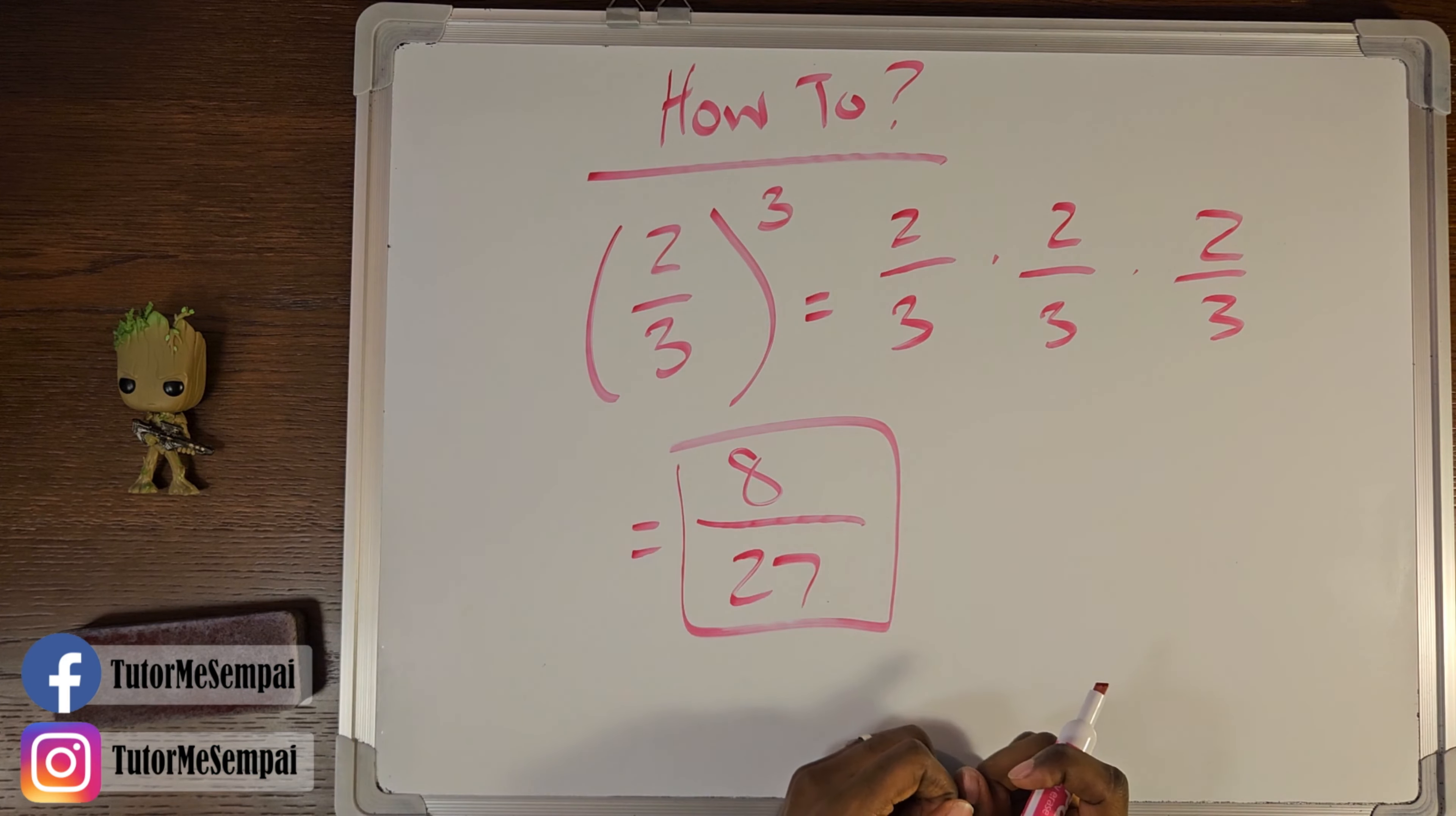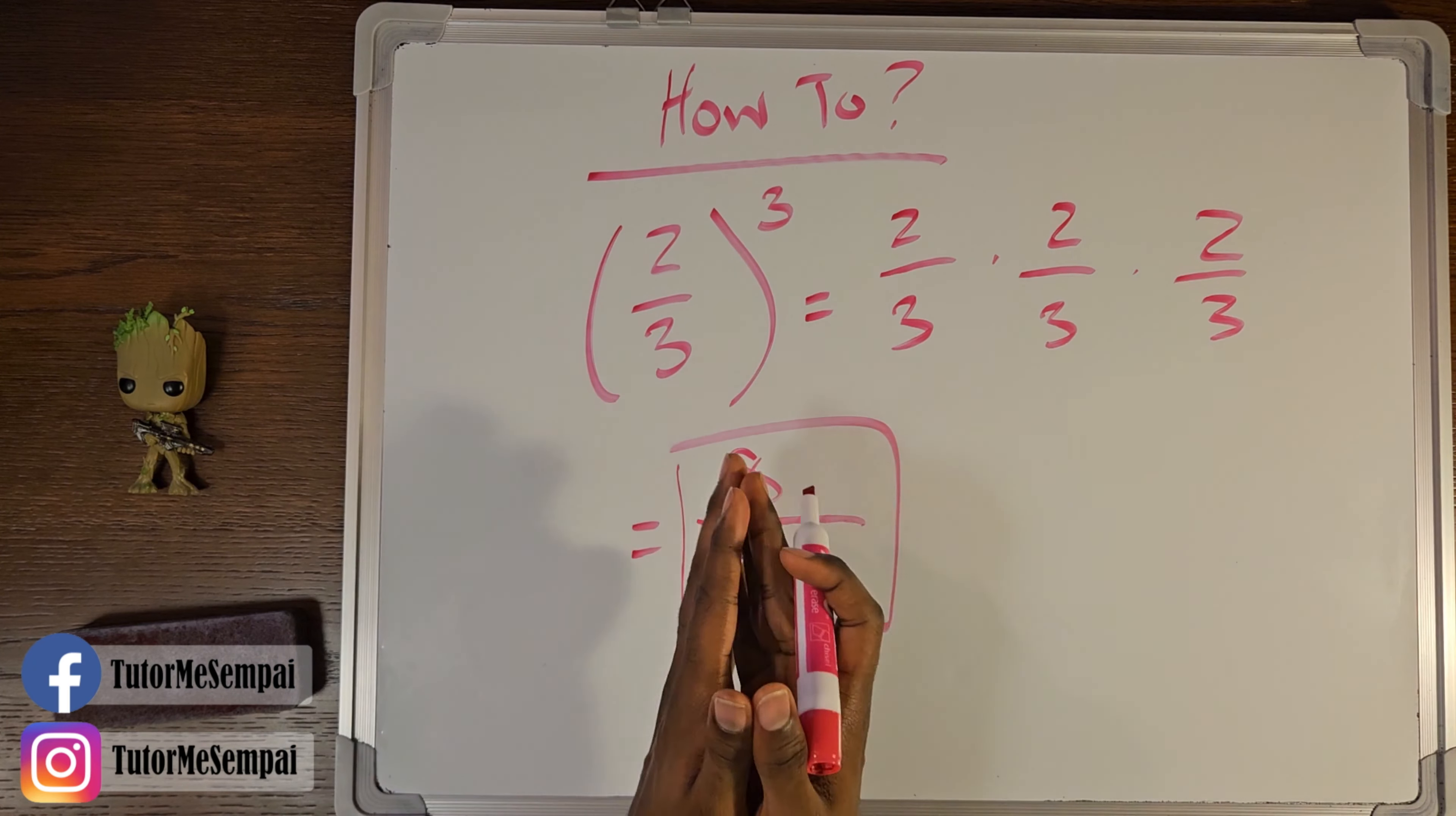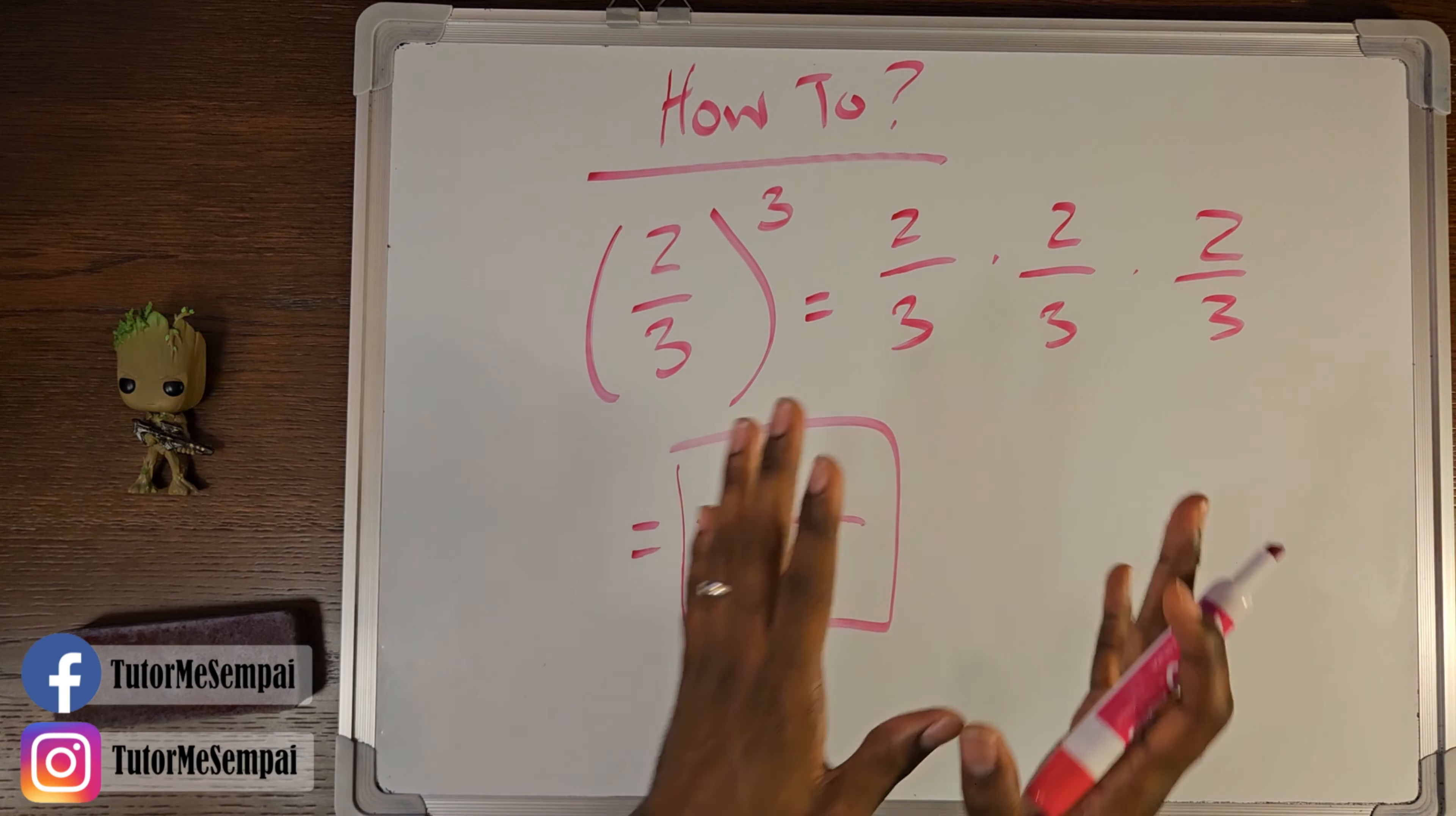So this can be pretty quick if the exponent is smaller, but if it's a larger exponent you can see how this can take up a lot more space. So this is going to be our expanded one—it can take a little bit more time. However, it's tried and true. If you take your time and you do it this way, you will get the correct answer if you do your math properly.